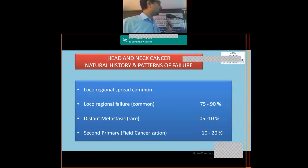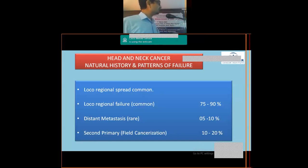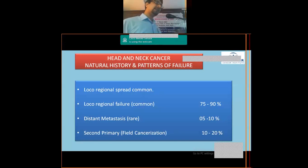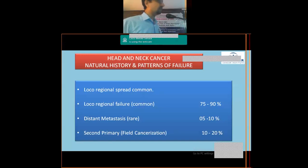Because locoregional spread is common, recurrences after treatment are also most often locoregional — local and nodal recurrences are common in head and neck cancers. Distant metastasis, whether at initial presentation or at recurrence, is relatively rare, accounting for only 5 to 10 percent of cases.